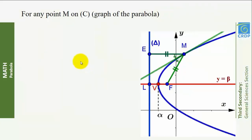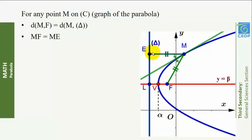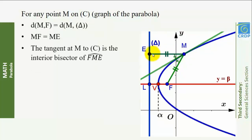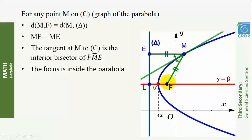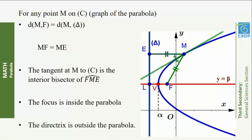For any point M on C, the distance from M to F equals the distance from M to delta, i.e., MF = ME. The tangent at M to C is the anterior bisector of angle FME. The focus is inside the parabola and the directrix is outside the parabola.